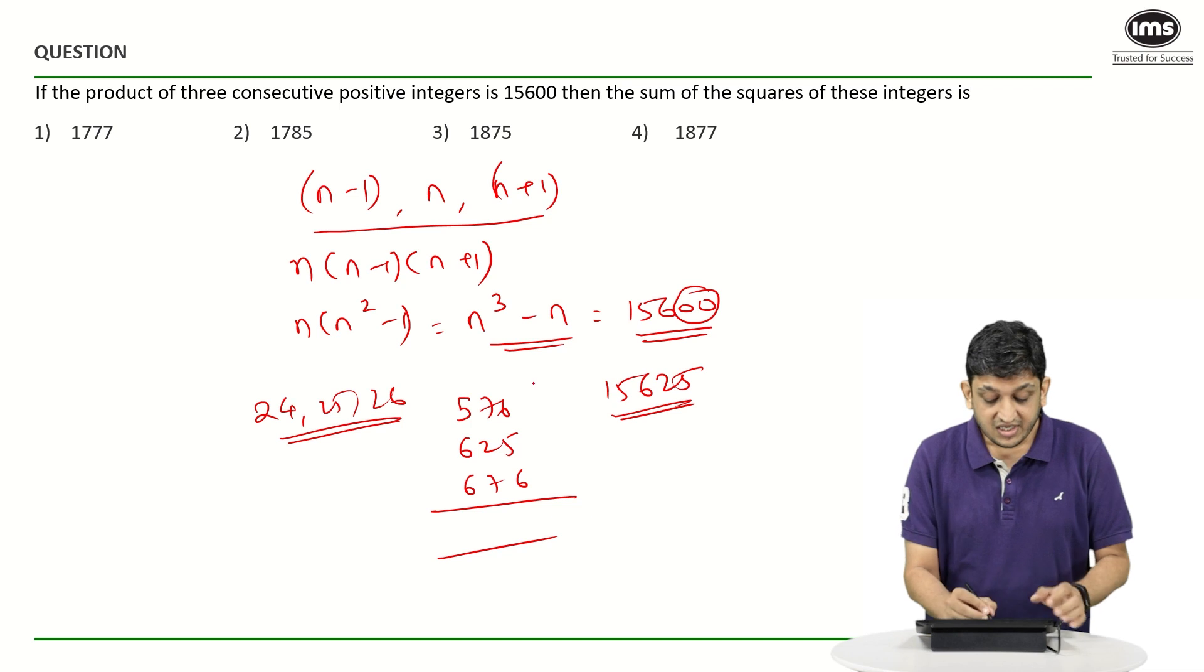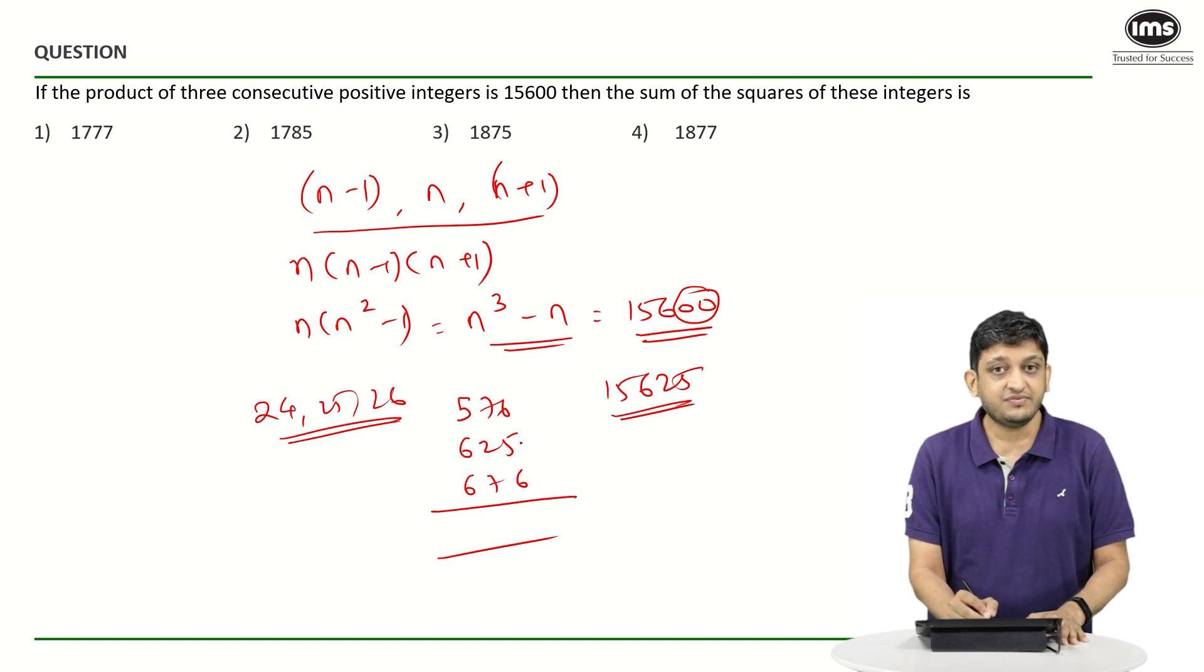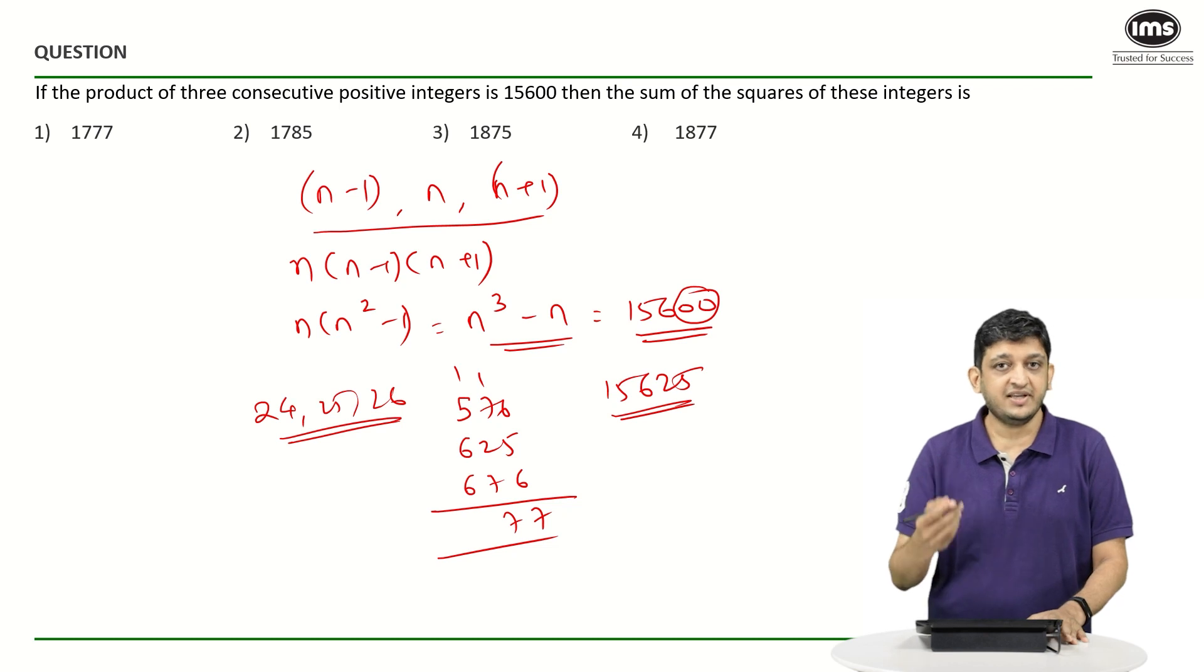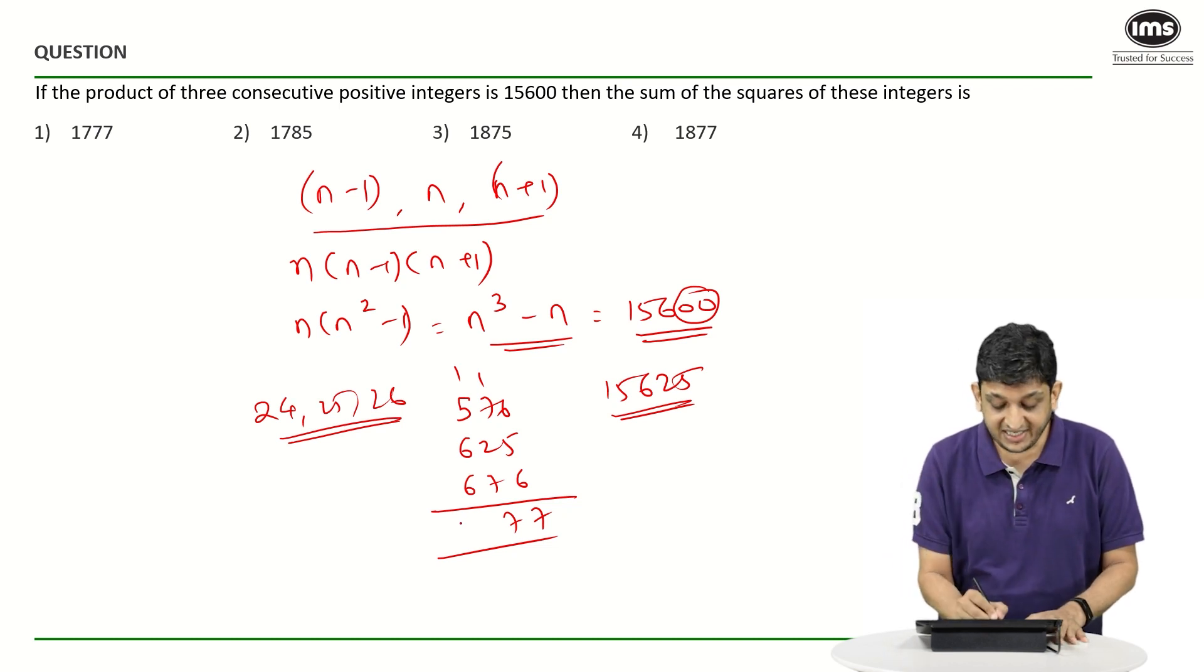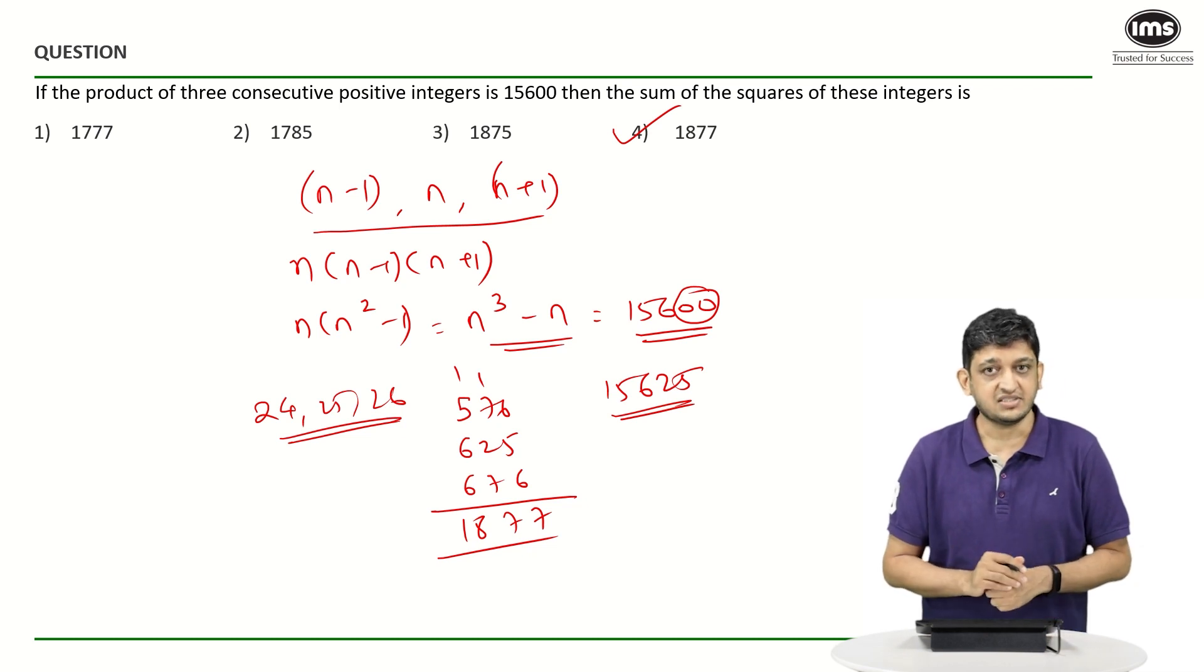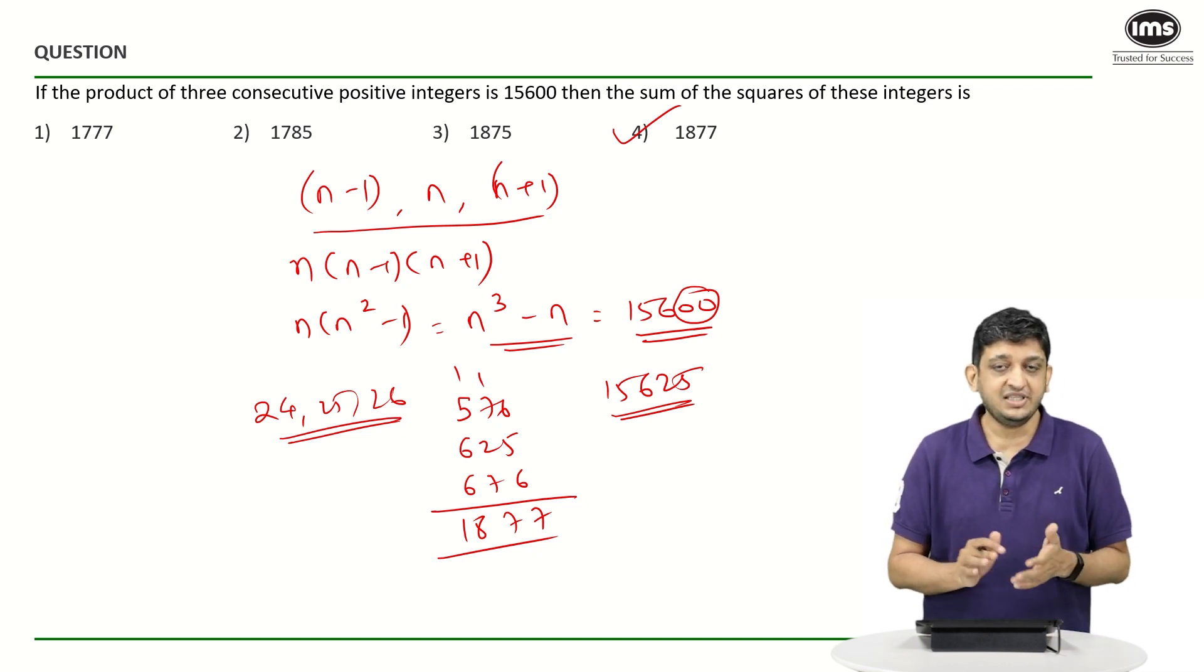If you add the three, you are going to get the answer. So 6 plus 5 is 11 plus 6 is 17. 7 plus 1 is 8 plus 2 is 10 plus 7 again is 17. 1 plus 5 is 6 plus 6 is 12 plus 6 is 18, which will give us 1877 as our answer. So option 4 is going to be the correct answer here.